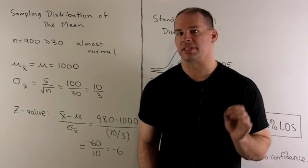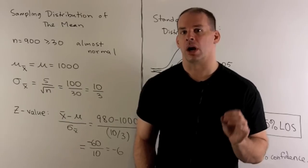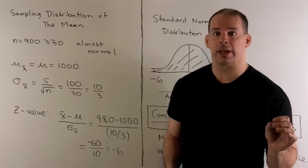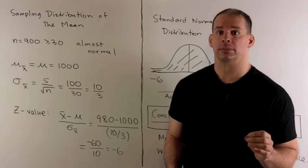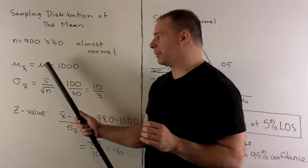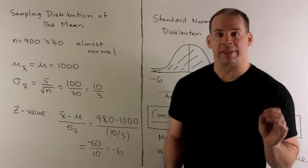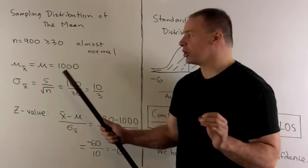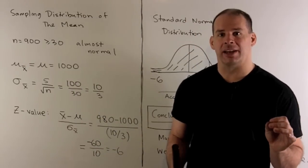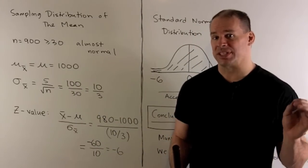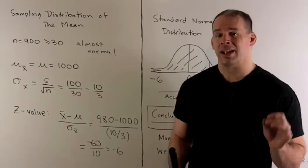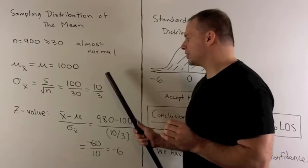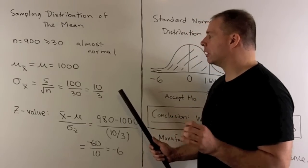Now let's take a look at the sampling distribution of the mean. Our sample size is 900, so that's greater than or equal to 30. Our distribution is almost normal. The mean is equal to the population mean. We're assuming that's equal to 1,000. For the standard deviation, because n is large, we're going to approximate population standard deviation with the sample standard deviation. Then I divide by the square root of the sample size. So we'll have 100 over 30 or 10 thirds.